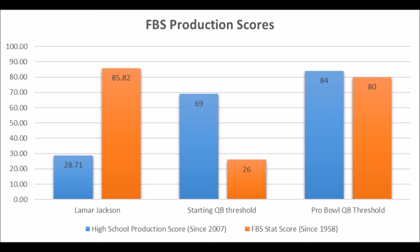Keep in mind that the high school production score data only goes back to the 2007 NFL Draft class, so it's not out of the realm of possibility that Lamar Jackson could be an outlier in terms of the data. But it does speak to the fact that he's had issues in his career in terms of efficiency, touchdown-interception ratio, and completion percentage. His best single-season score at the FBS level is 85.82 out of 100.